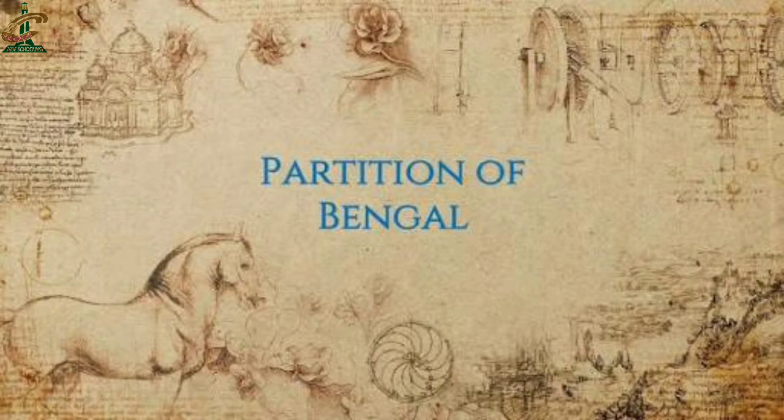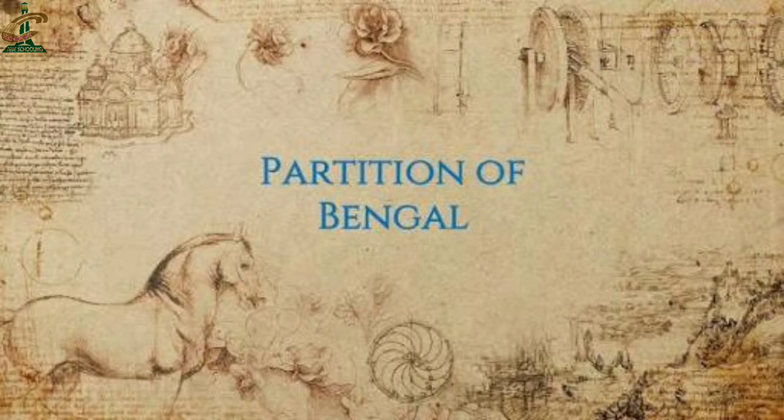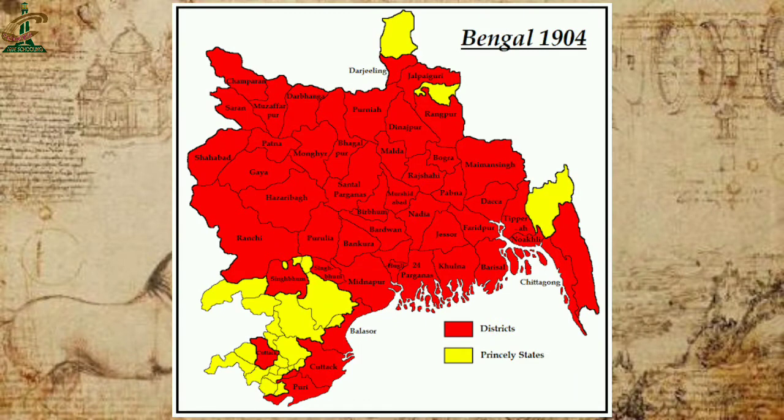So dear students, what is the Division of Bengal? Let's discuss. Due to administrative limitations and for their own convenience, the British rulers divided Bengal into two parts in 1905. In British India, the province of Bengal was the largest in terms of population and area.